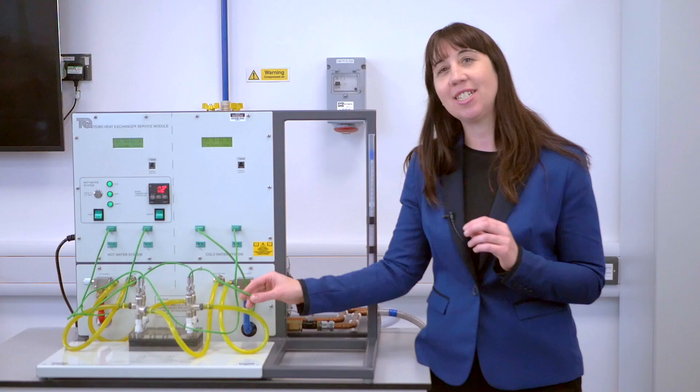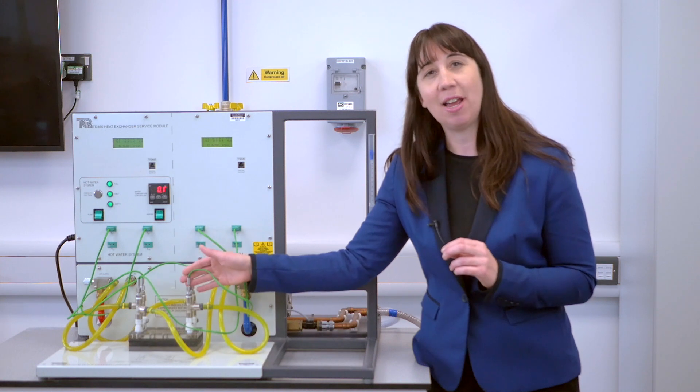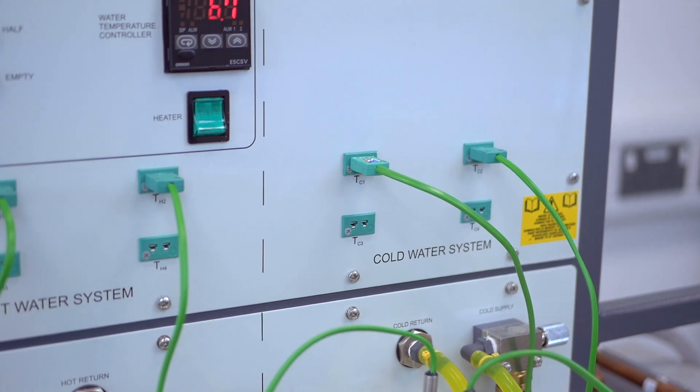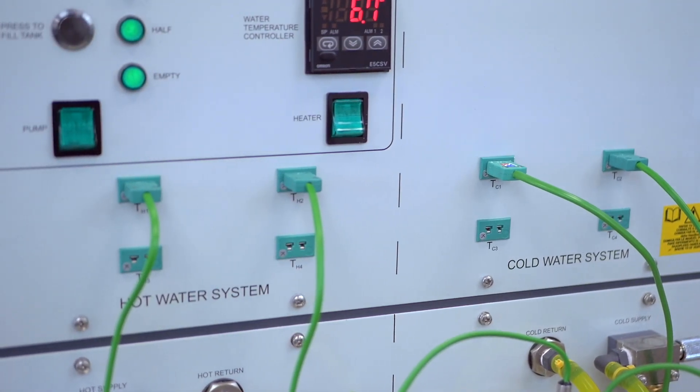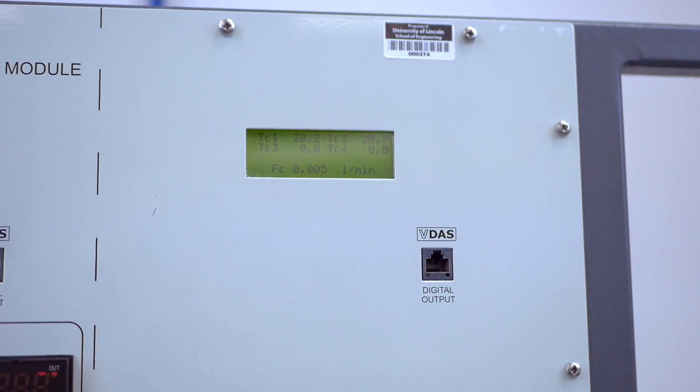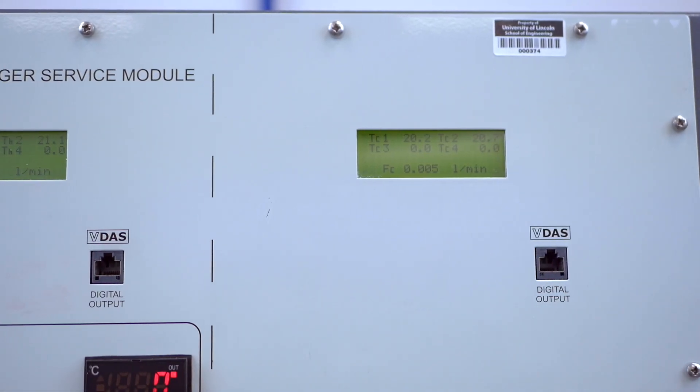As you can see here that next to each connector is a K-type thermocouple. These connect the sockets on the service module to measure the water temperature at the inlet and outlet of heat exchangers. The temperatures are displayed on these LCDs along with flow rates taken from the flow sensors.